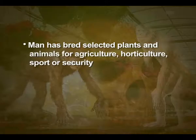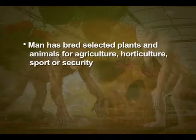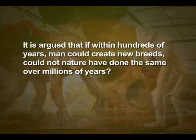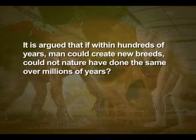Man has bred and selected plants and animals for agriculture, horticulture, sport or security. Man has domesticated many wild animals and crops. This intensive breeding program has created breeds that differ from other breeds — for example, dogs — yet they are still the same species group. It is argued that if within hundreds of years man could create new breeds, could not nature have done the same over millions of years?